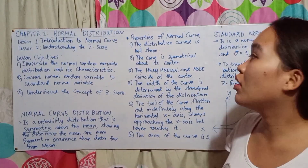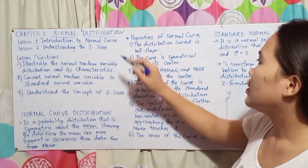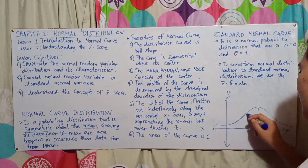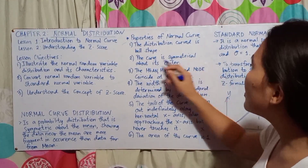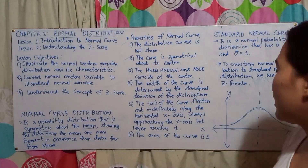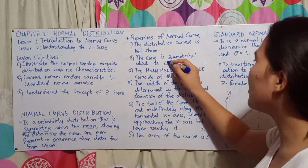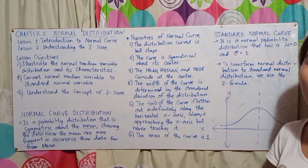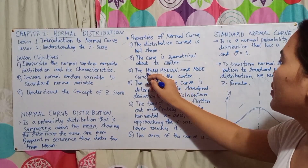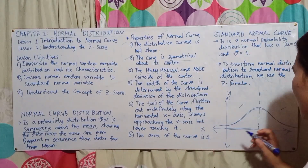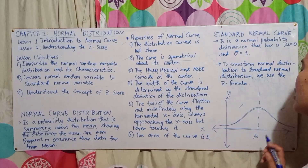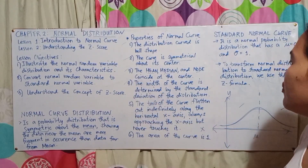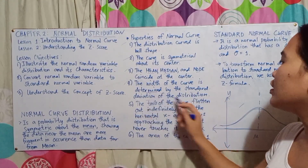So we have properties of the normal curve. First, the distribution curve is bell-shaped. Second, the curve is symmetrical about its center — meaning the distribution is the same on the left and right. Third, the mean, median, and mode coincide at the center.